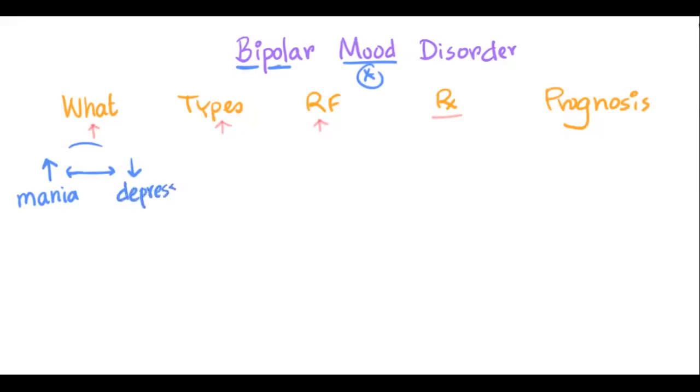So patients with bipolar mood disorder swing back and forth between those two areas of mood. Mania is elevated mood and depressed mood is the depression.